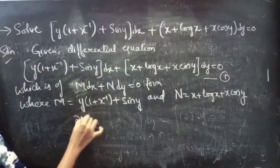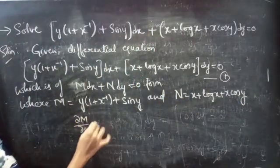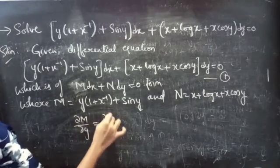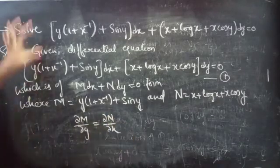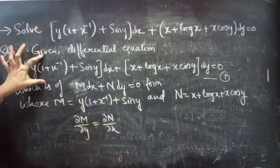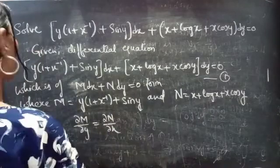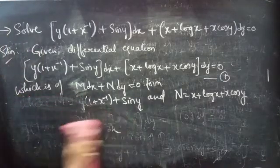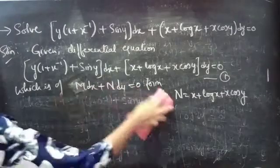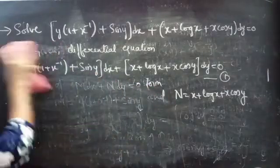If the partial derivative of M with respect to y is equal to the partial derivative of N with respect to x, then we can say that the given differential equation is an exact equation. So first we will find both partial derivatives.